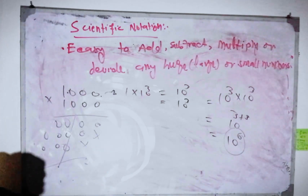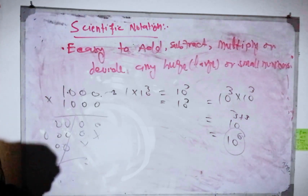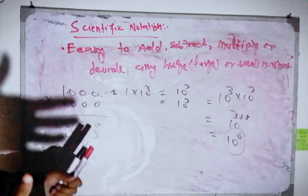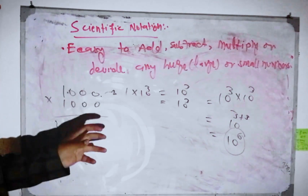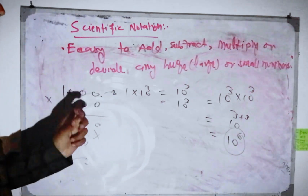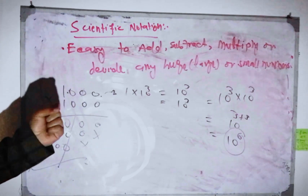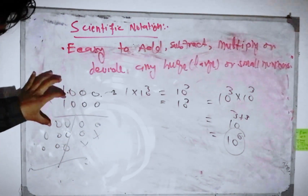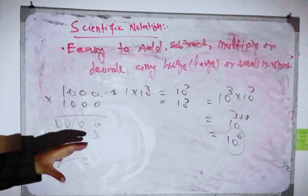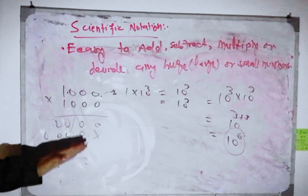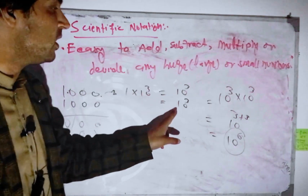Scientific notation is explained as a way to express huge, large, or small numbers in decimal form or concise manner. Without scientific notation, multiplying very large numbers would require much more space, but with scientific notation we can multiply easily.